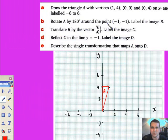Then rotate triangle A by 180 degrees around the center of rotation, which is at minus 1, minus 1.